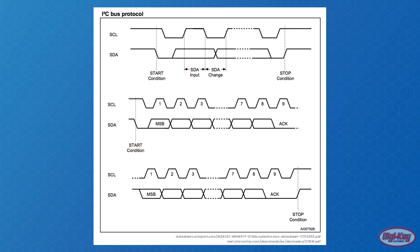The start bit is the very first bit to be sent, the 8-bit data packet is then sent, the responding device sends back the acknowledge bit, and then a stop bit is sent. However, most I2C messages often involve more than one packet of data, so the start bit is only sent at the very start of the transaction, and the stop bit is sent at the very end of the transaction.